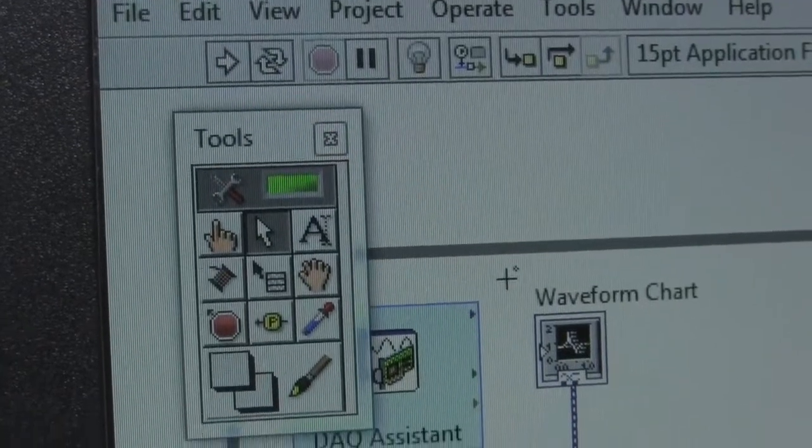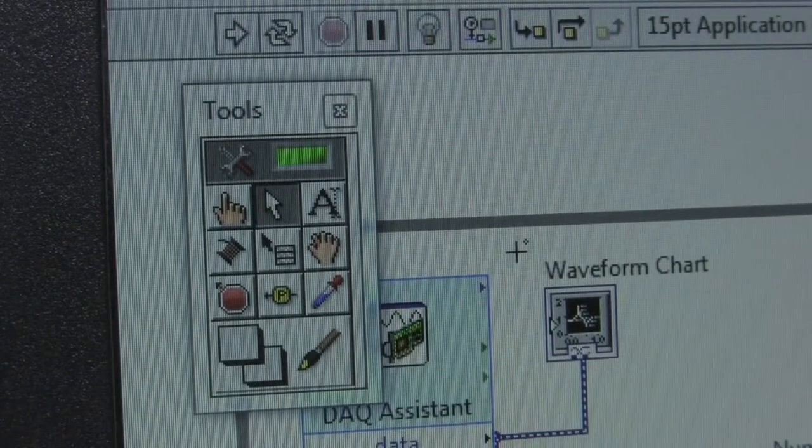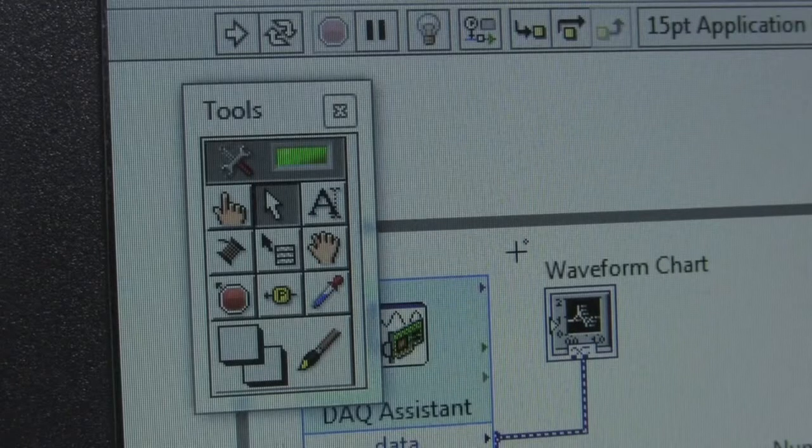On this panel, different tools can be selected for wiring, selection, operator values, and text. Make sure the arrow is highlighted. All other tools are for building a virtual instrument, which is not covered in this video.